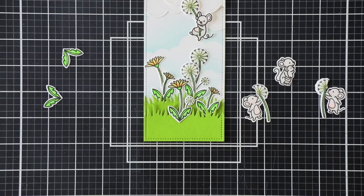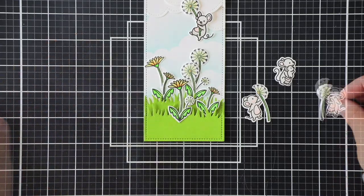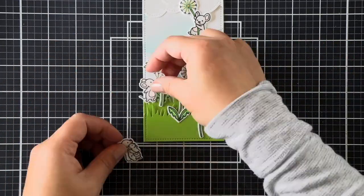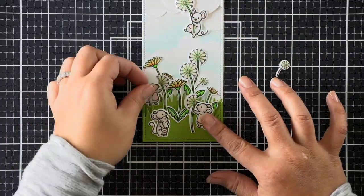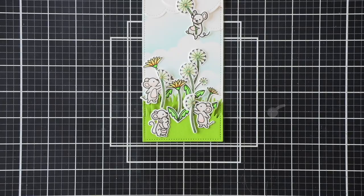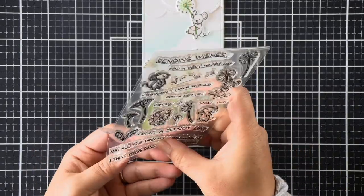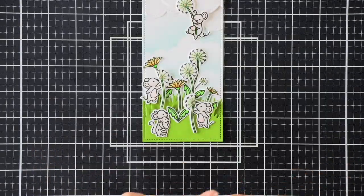So once I'm done with all of those images, I'm going to go ahead and attach my mice. So I'm just playing with the arrangement here before I adhere my final images. I just want to make sure that there is plenty of room for a sentiment before I adhere those final images down.